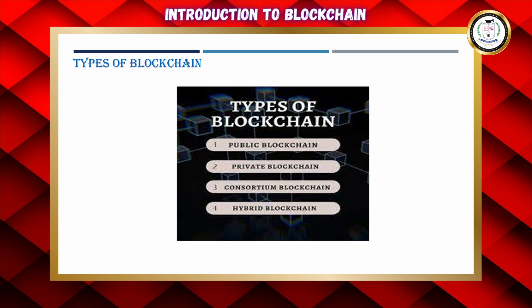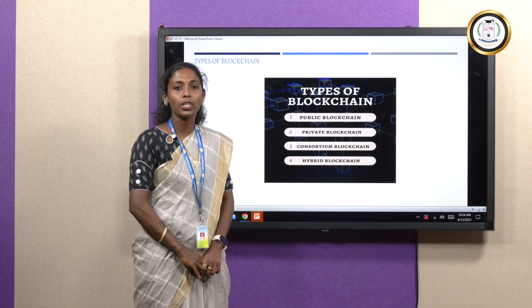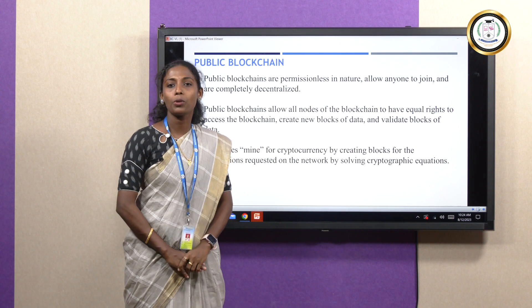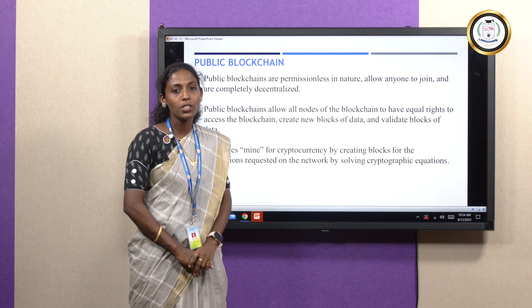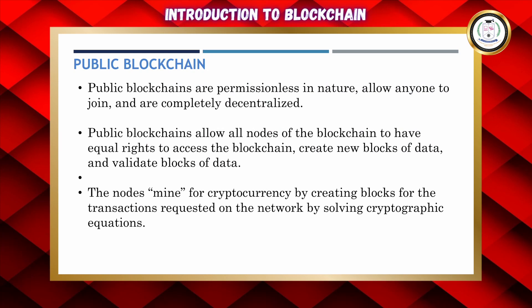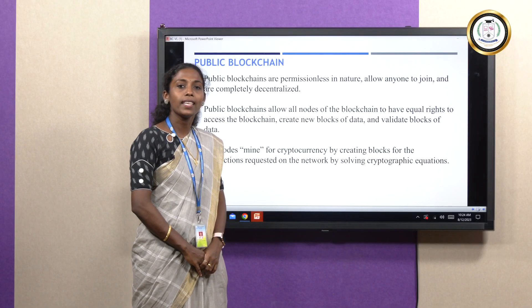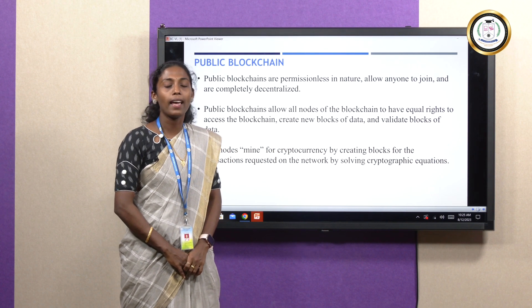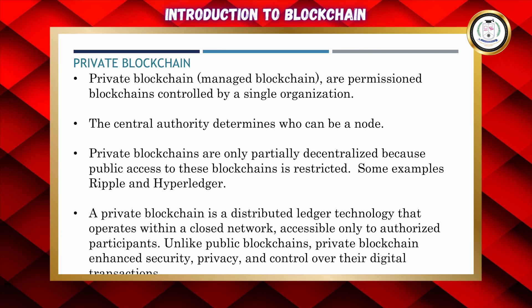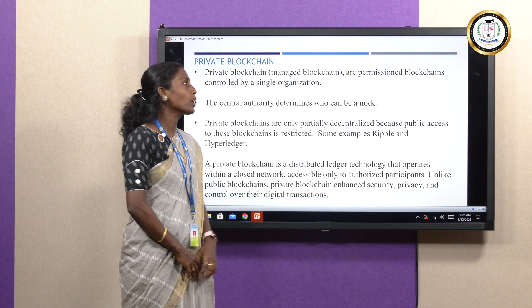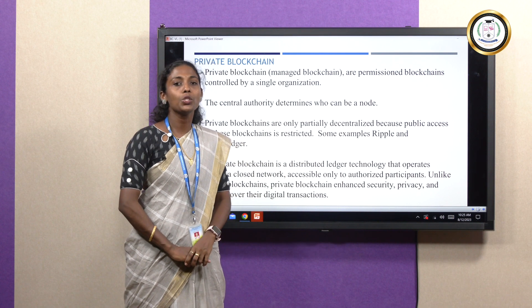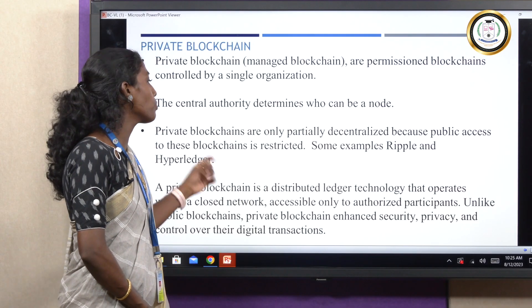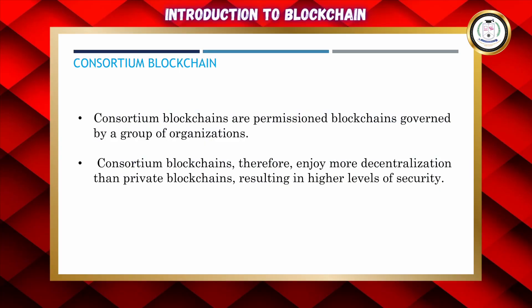There are four types of Blockchain. The first is public blockchain, a permissionless type where any node in the network can join. Examples are Bitcoin and Ethereum. The second is private blockchain, which falls under permissioned or managed blockchain, where a central authority controls all nodes and only nodes with permission can enter. Examples are Ripple and Hyperledger.